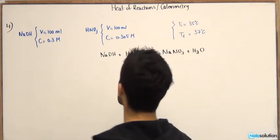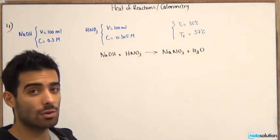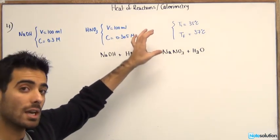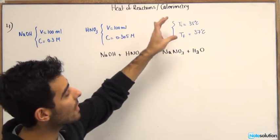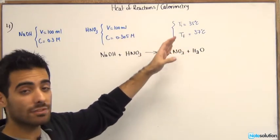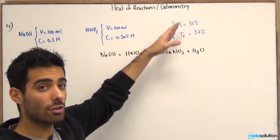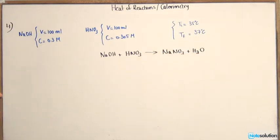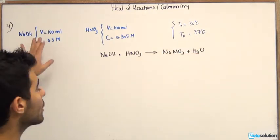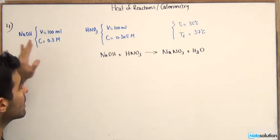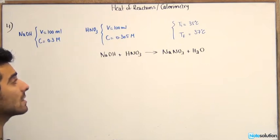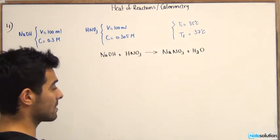So in this reaction we have NaOH mixing with HNO3. From the given, we saw that the temperature increased from T initial of 35 degrees to T final of 37 degrees Celsius. We are given the volume and the concentration for both NaOH and HNO3. So the question is, what is the delta H reaction of this reaction?